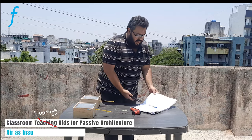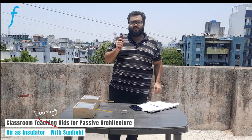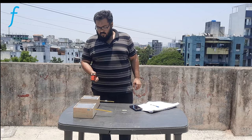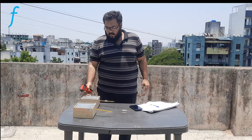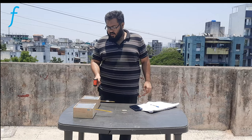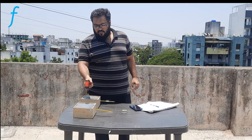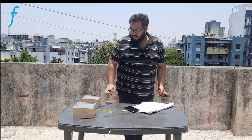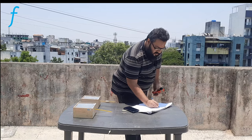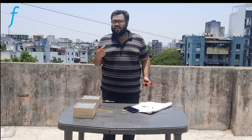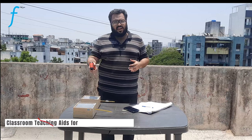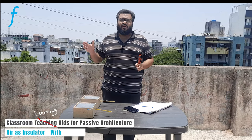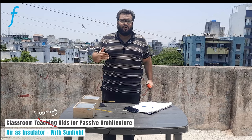I will start the timer and also use the temperature gun to note down the surface temperature readings on top. The first reading is 48 degrees Celsius and the second reading for the other panel is 50 degrees Celsius. So for the small cavity I have 48 degrees and for the big cavity I have 50 degrees. I will repeat this after an interval of one minute, taking surface temperature readings over a period of 10 minutes.